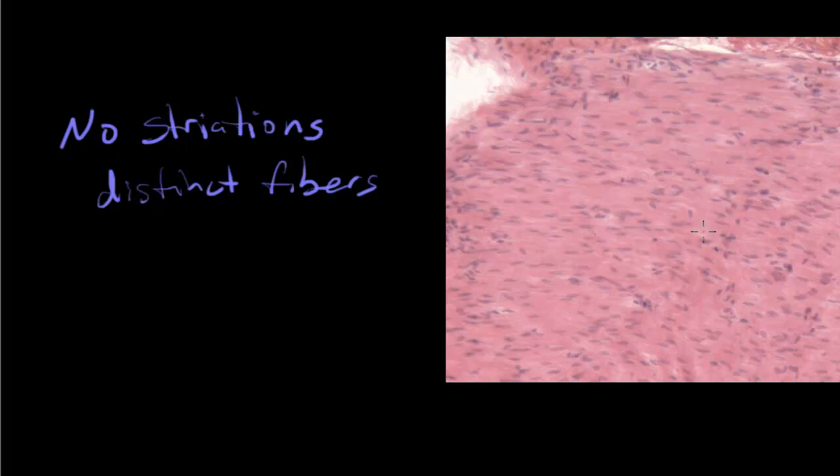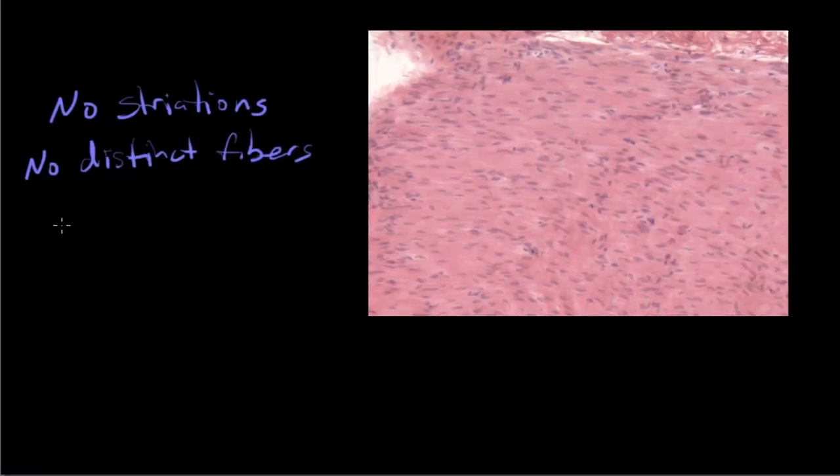Do you see any distinct fibers here? No, it just looks like kind of a big mass of pink so there are no distinct fibers. So we have no striations, no distinct fibers, so there can't be branching or unbranching because the fibers are really not all that distinct. So when you see all of these no's, it doesn't look like skeletal muscle, it doesn't look like cardiac muscle, but it sure is pink and I would like to call this muscle tissue, and our only option left then is smooth muscle.